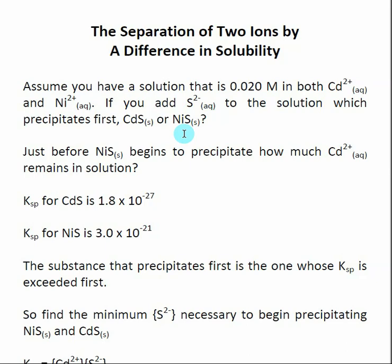We're going to get one of these to form first, remove it by filtration, and then get the other one to precipitate out and remove that by filtration. There are two parts to this question. First, we want to know which of the two insoluble salts precipitates out first — determined by looking at the minimum concentration of S²⁻ required. Second, we want to understand how efficient our separation was.